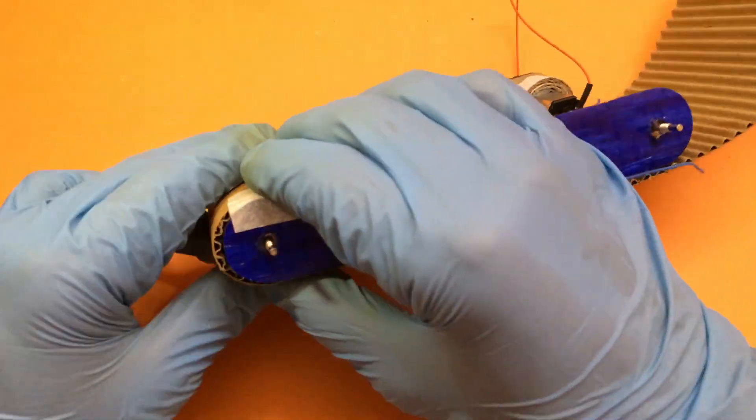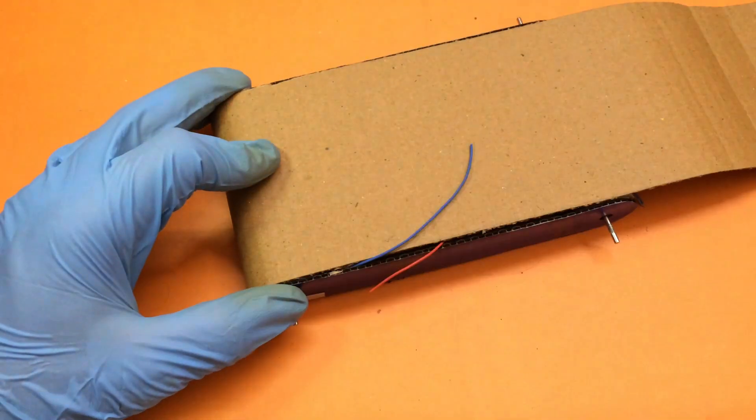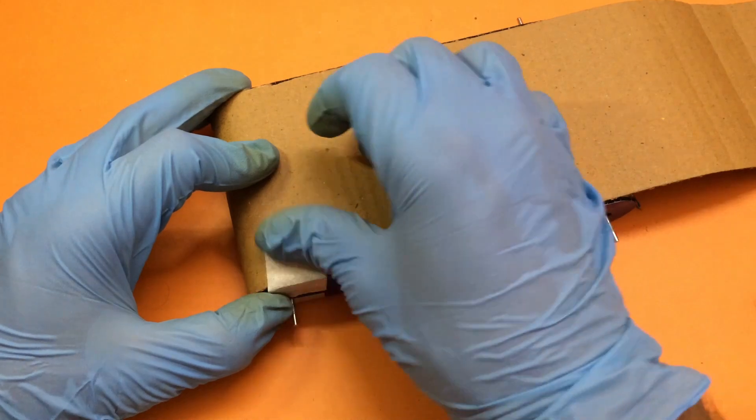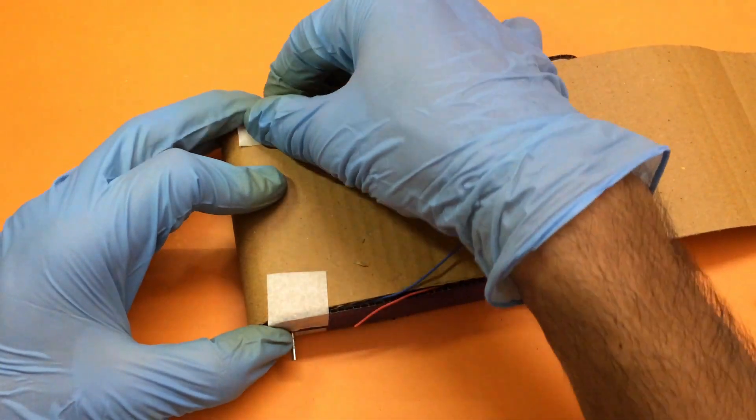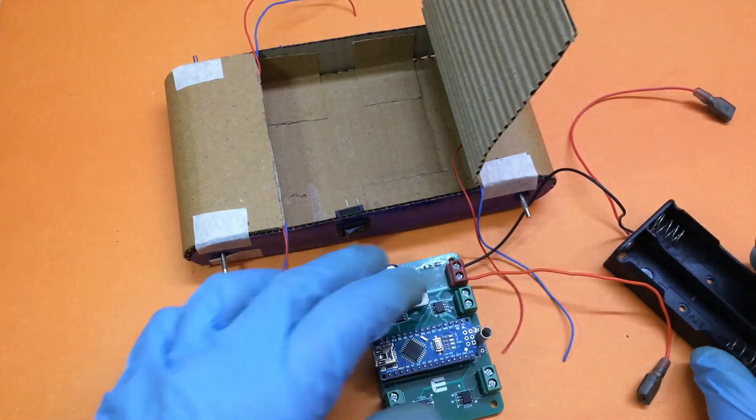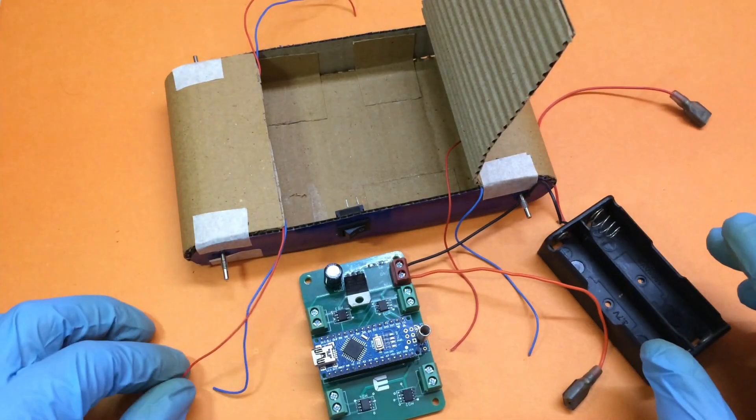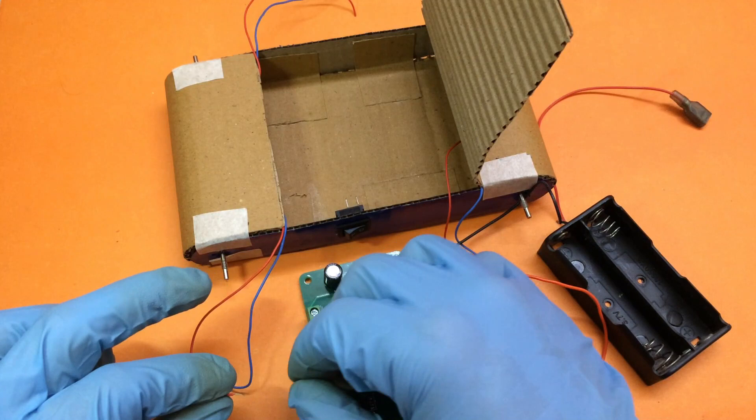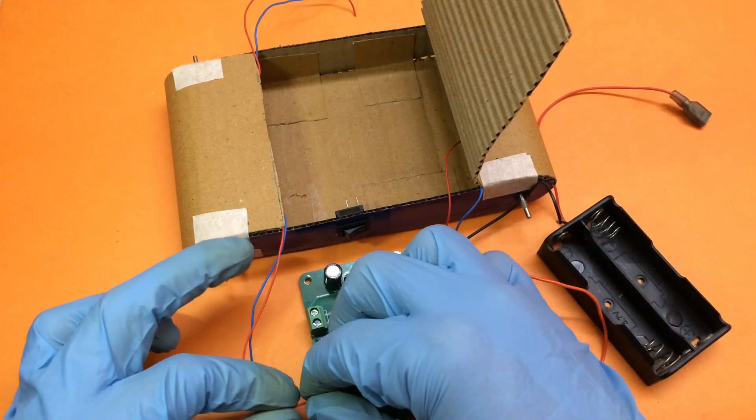Masking tape is good as it holds them together until the glue dries and when we need to peel them it doesn't leave any residue. So we need to do the same for the other side. Now our RC car body is ready and we can place the electronics in it. But first we need to do the wiring.